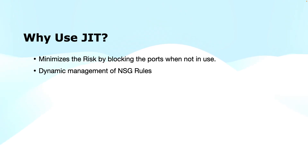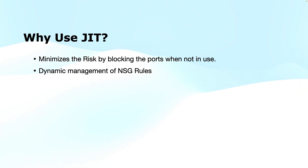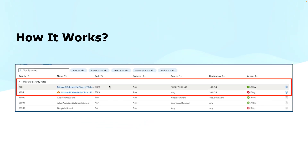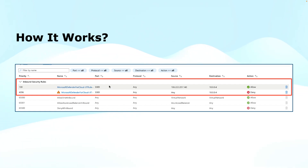Dynamic management of NSG rules is done through Just-in-Time VM Access. We have the option to open or block ports on virtual machines through NSGs, but that is a static process — you have to manually adjust those rules. Just-in-Time VM Access manages NSG rules dynamically. As you see in this screenshot, when I enable Just-in-Time VM Access on a virtual machine, a rule with priority number 4096 was created.